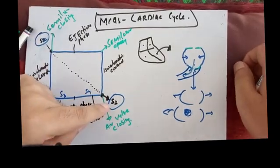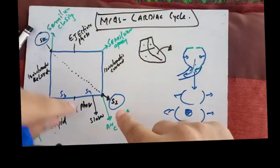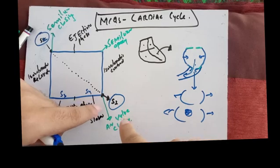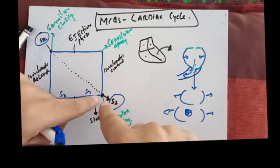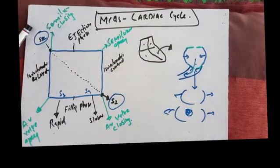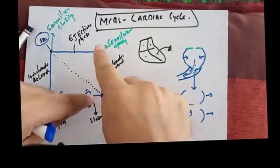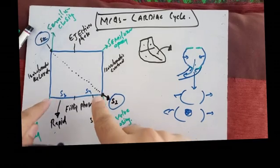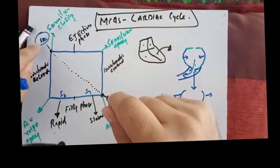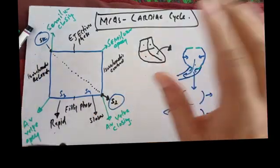Another MCQ: is S1 produced at the start or end of isovolumetric contraction? S1 is produced due to closure of the mitral and tricuspid valves. They close at the end of the filling phase or at the start of isovolumetric contraction. So S1 is produced at the start of isovolumetric contraction, or equivalently at the end of the filling phase.